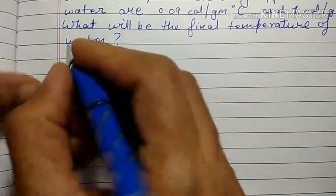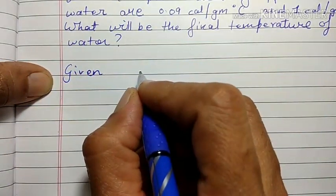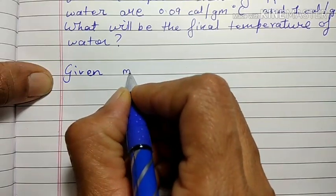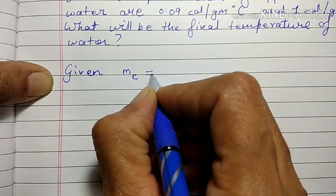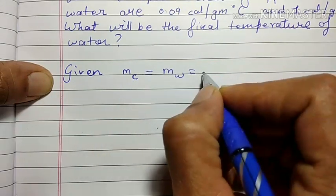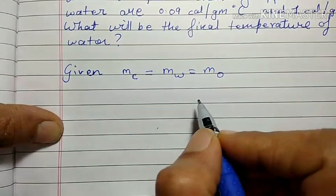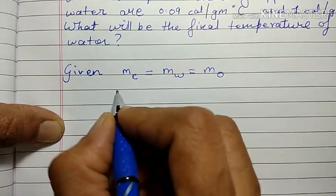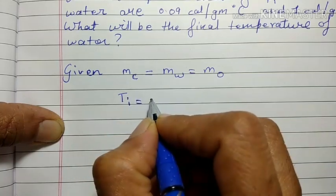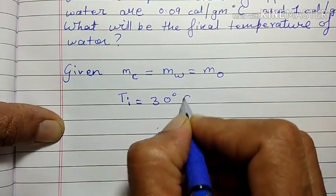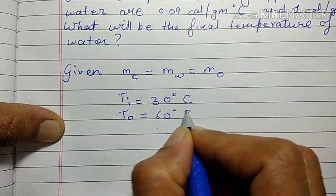Let's write down what is given. The masses of all three objects are the same: mass of calorimeter mc = mass of water mw = mass of object mo. The initial temperature ti = 30°C, and the initial temperature of the object to = 60°C.